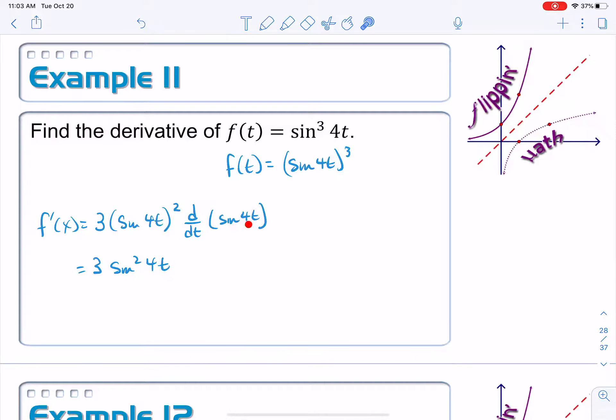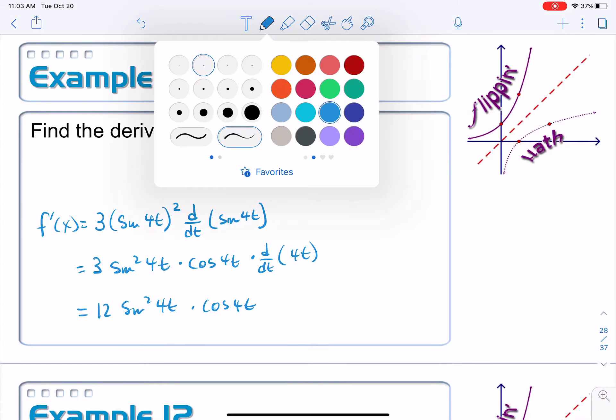Now the derivative of sine of 4t is cosine of 4t. Oh, but it was a composite function as well. So we're going to have to multiply it times the derivative with respect to t of 4t. The derivative with respect to t of 4t is just 4. And you know what? I'm going to take that 4. I'm just going to bring it out to the front here to make that 12. So here's your final derivative. 12 sine squared of 4t times the cosine of 4t. And it's finished.